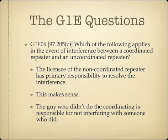Which of the following applies in the event of interference between a coordinated repeater and an uncoordinated repeater? The answer is the licensee of the non-coordinated repeater has primary responsibility to resolve the interference. This makes sense — the operator who didn't do the coordinating is responsible for not interfering with somebody who did. It's a common sense rule: if you didn't coordinate, it's your responsibility to fix the problem.